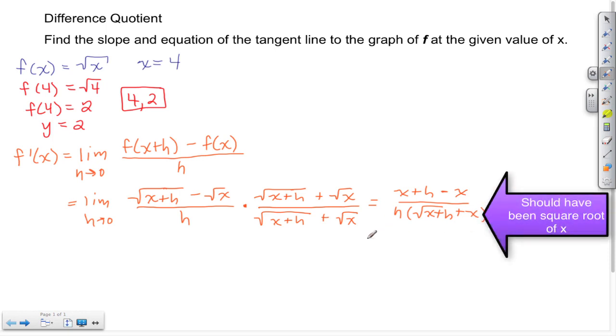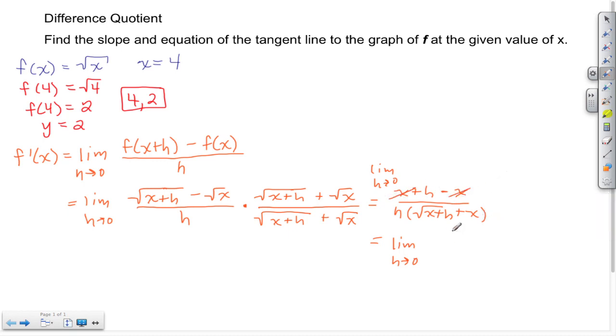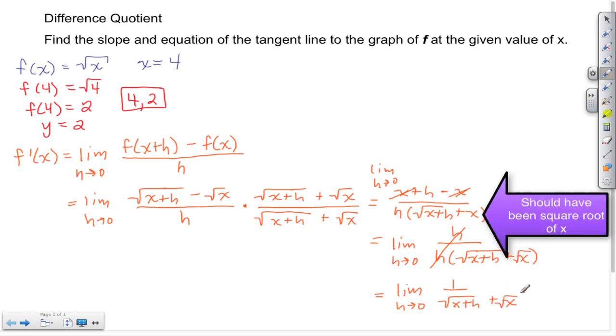Now I begin to do some simplification and I need to put the limit as h approaches 0. I'll continue down here. The limit as h approaches 0, I have x minus x so those x's go away. I'm left with just an h in my numerator. And when I rewrite my denominator, you'll notice that this h factor can be factored out. So those h's go away and here I'm left with the limit as h approaches 0 of 1 over the square root of x plus h plus the square root of x.